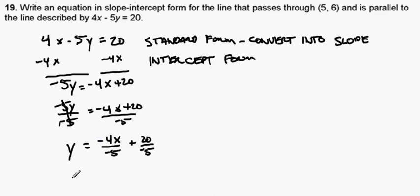A negative divided by negative is a positive. So here we get y equals 4 fifths x minus, and 20 divided by 5 is 4. So the slope of our original line, then, is 4 fifths.